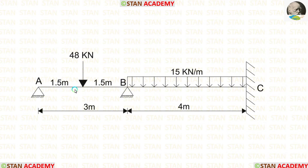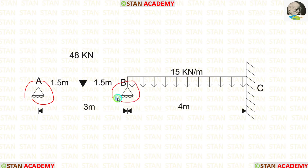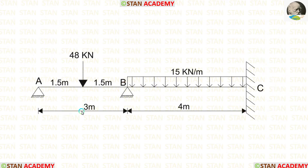In span AB, there is a point load of 48 kN acting at the center. In span BC, there is a uniformly distributed load of 15 kN per meter acting for the full span. At points A and B, there are hinged supports, and at point C, there is a fixed support. Span AB is 3 meters long and span BC is 4 meters long.